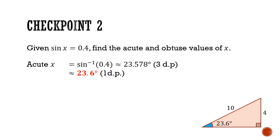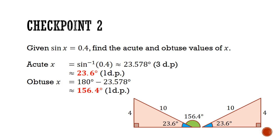To find the obtuse value of X, we can draw a triangle congruent to the one that we drew earlier. But this time, the reference angle will be this obtuse angle labelled in green. And this is just found by taking 180 degrees minus 23.6 degrees, and that will give us an answer of 156.4 degrees.